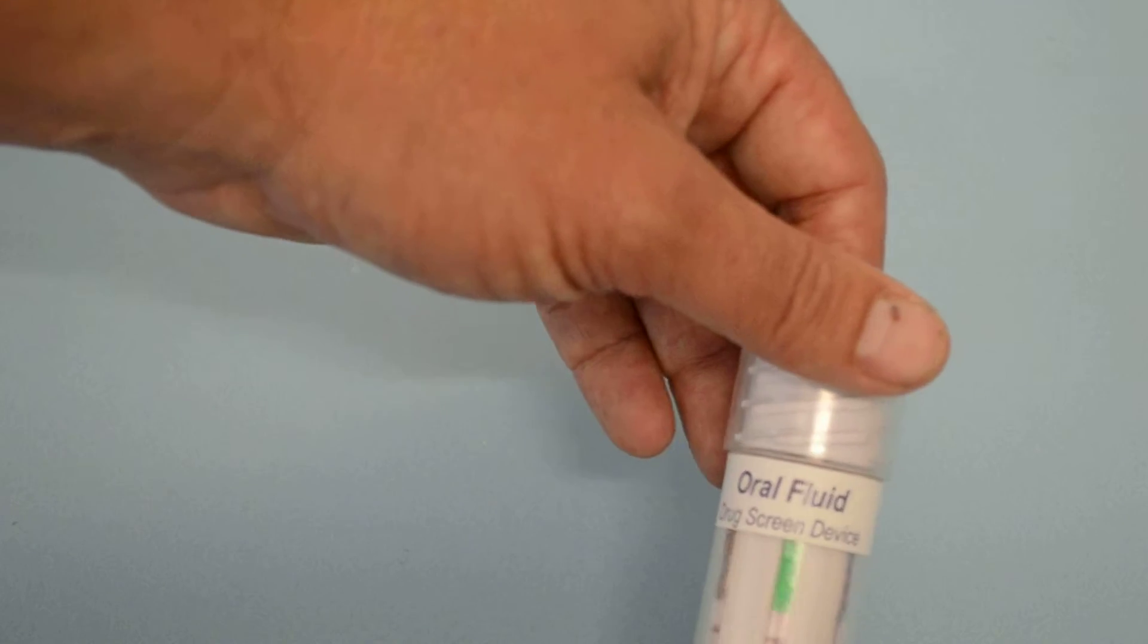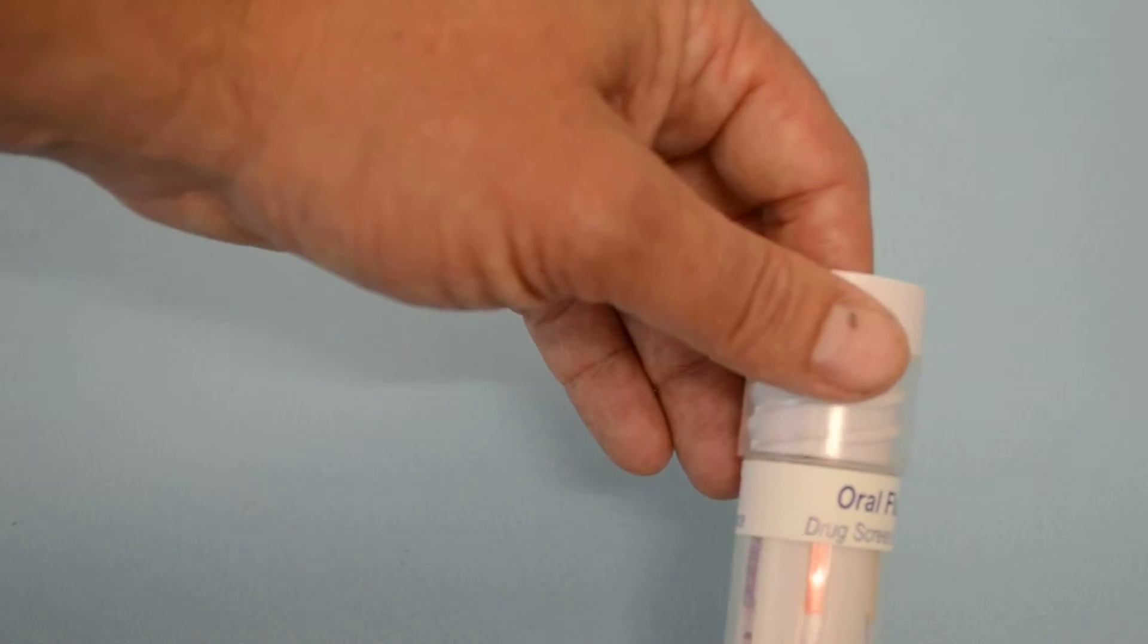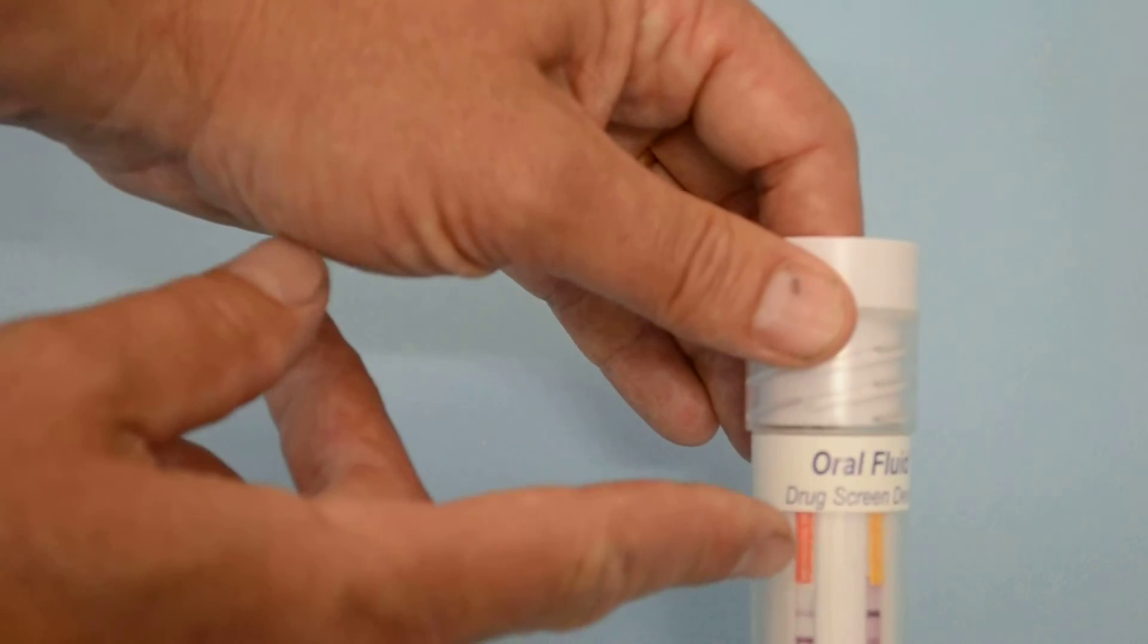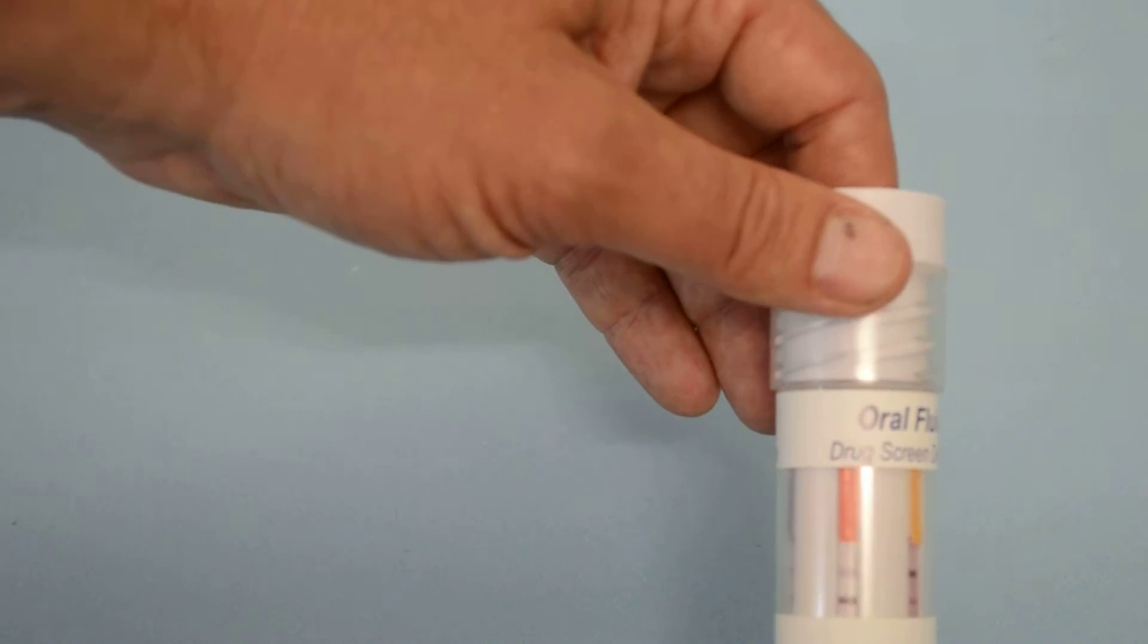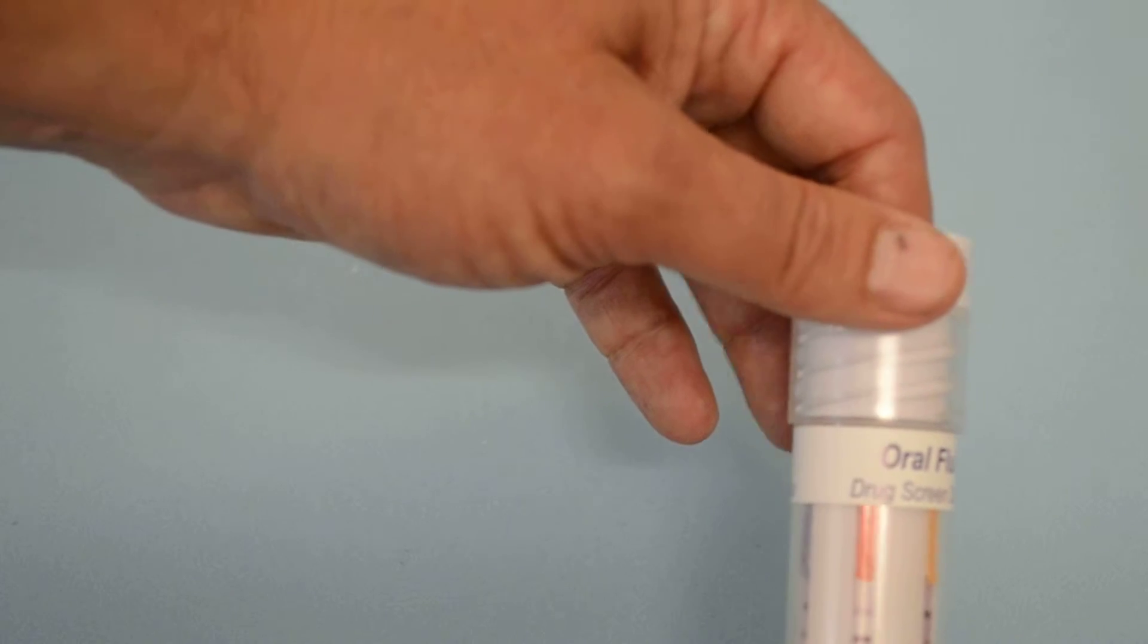What you can see here is some really nice clear control lines. The control line is the line that forms nearest the handle end, furthest away from where the sample has been added and shows that sufficient sample has been added and absorbed by that test membrane.